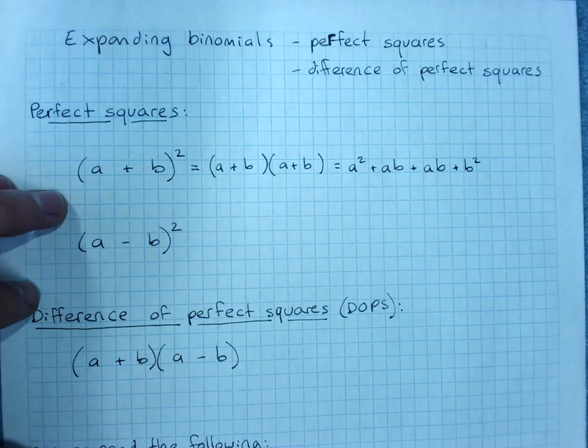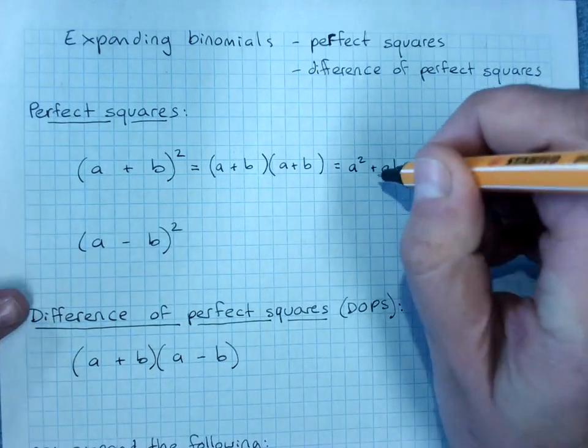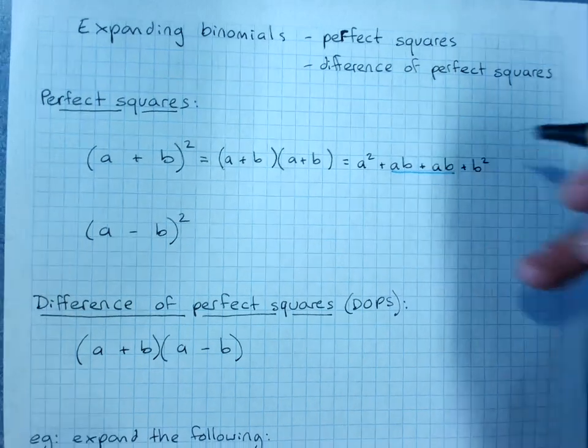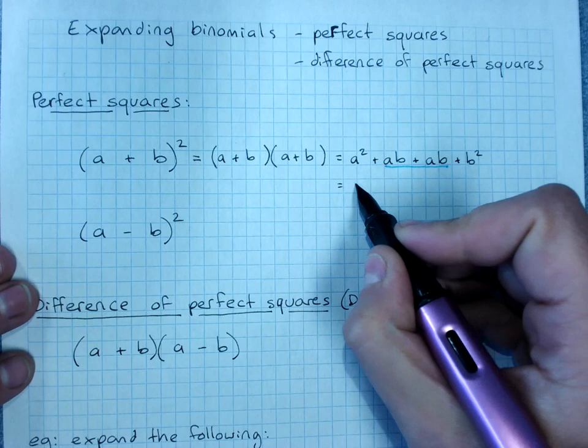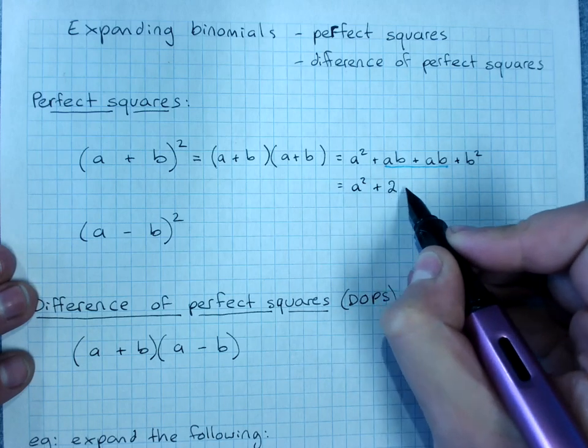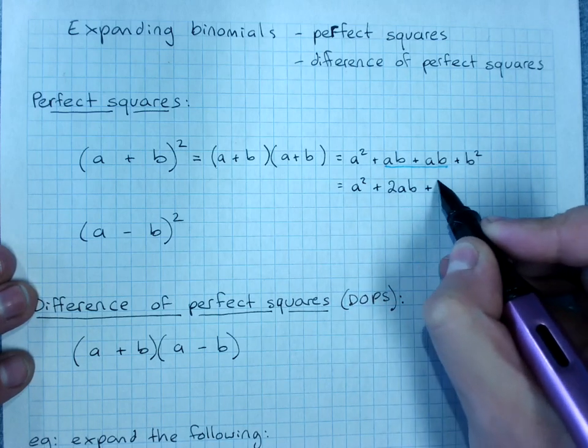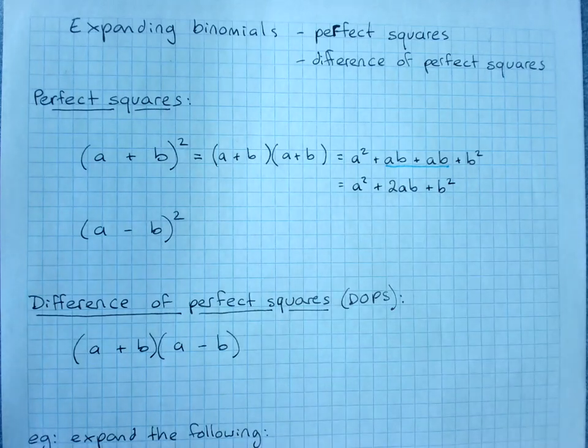The two terms in the middle, you'll see, work out identical. And when we gather those together, we get a² + 2ab + b².